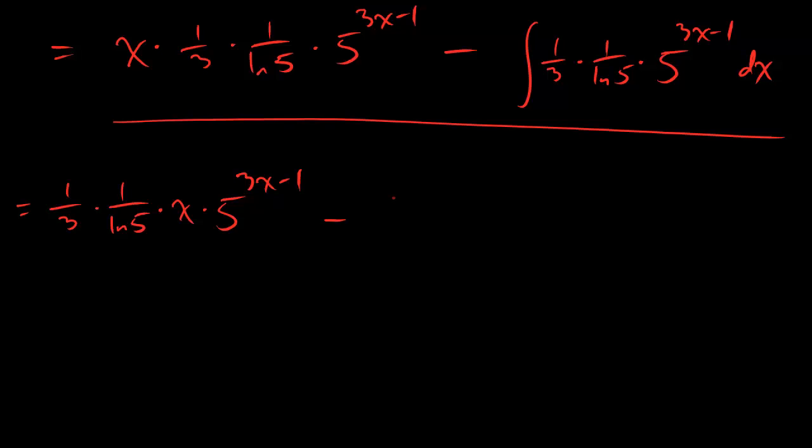and we're going to minus the integral, but let's bring those constants out front. 1 over 3, 1 over ln 5, integral, 5 to the 3x minus 1.